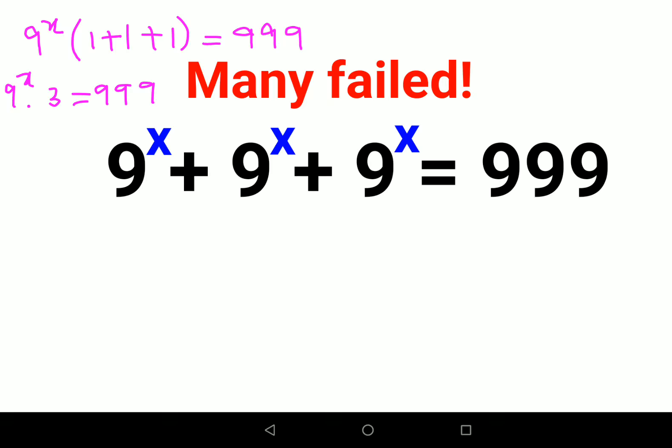To find x, we'll divide both sides by 3, giving us 9^x = 333. Now I can write everything in terms of 3. This becomes (3²)^x = 3 times 111.